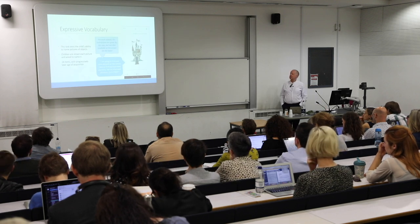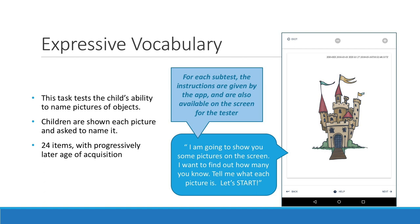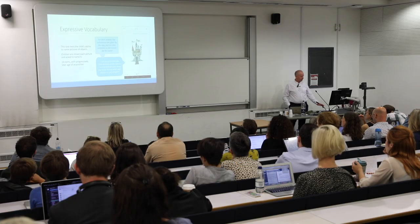The first test that the child does is a test of expressive vocabulary, which is simply a naming test. The children see 24 pictures and give the name for each. The tester marks their responses as correct or incorrect by tapping a plus sign if correct or a minus sign if incorrect.